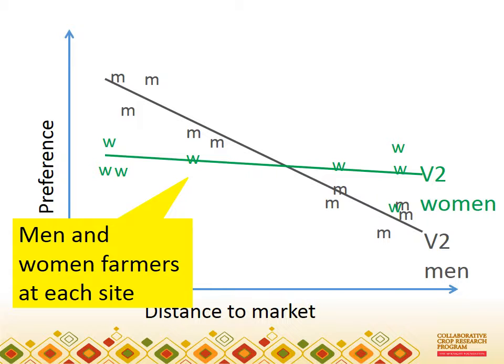You need to be on the ground and design a study that includes both men and women at each location. Of course, there are still many details to think through, such as how many men and women are needed at each site, and whether men and women can state preferences based on the same plots of the crop, or do they need to grow their own plots.